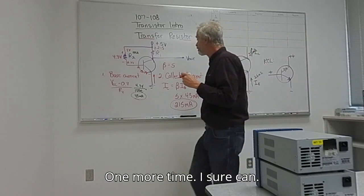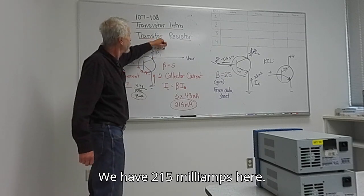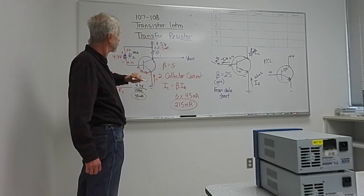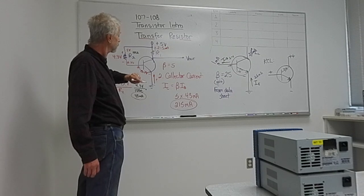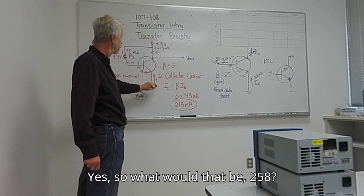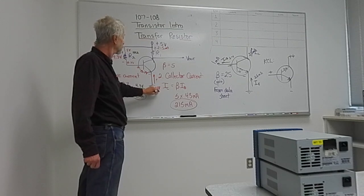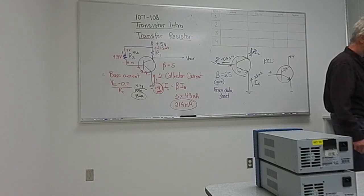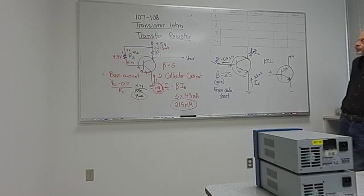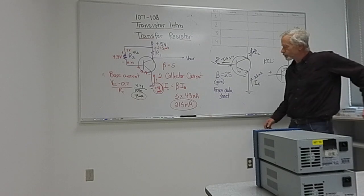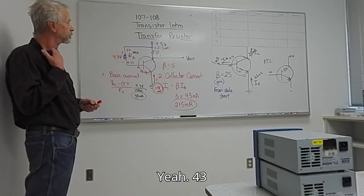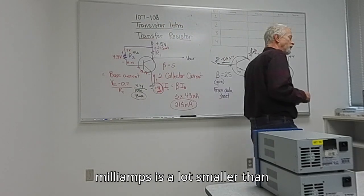Can I have one more time? We have 215 milliamps here. How many do I have here? 215 plus 43. Yes, so what would that be, 258? Yeah. Do we have amplification? Yeah. 43 milliamps is a lot smaller than 215.